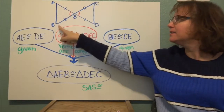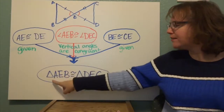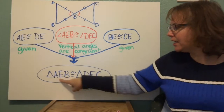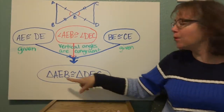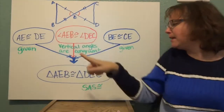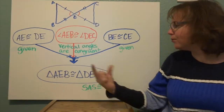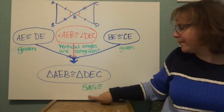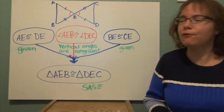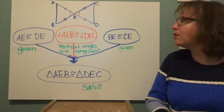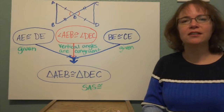Together, all of that leads to the final statement — and it's important to order the vertices correctly so that the corresponding sides are in the same order. So triangle AEB is congruent to triangle DEC, with the corresponding sides in order. I have to have a reason for this as well, and the reason is side-angle-side congruence. So we don't have to prove all of the sides and all of the corresponding angles congruent. Now I have two triangles proven congruent using a flow proof.